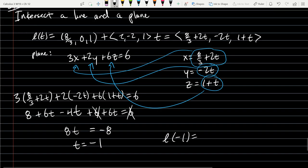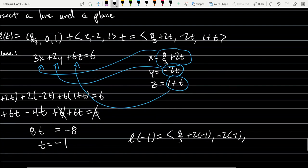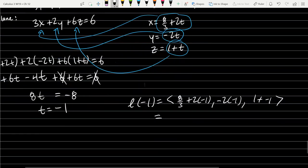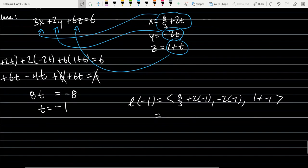So I'll use the vector form. We have eight-thirds plus two times negative one, comma negative two times negative one, comma one plus negative one. Both fractions, so we have eight-thirds minus six-thirds, which is two-thirds, positive two, zero.